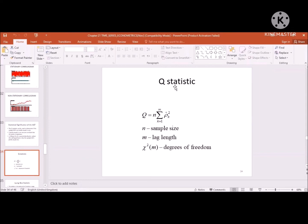So this is the Q statistic that is used to examine the significance, to examine that all ACF are simultaneously equal to zero.